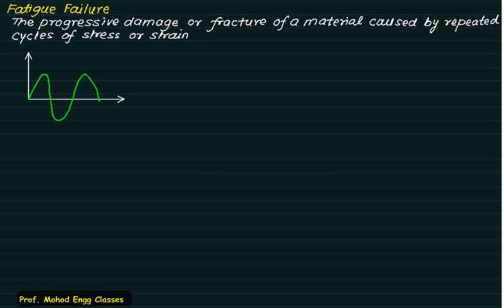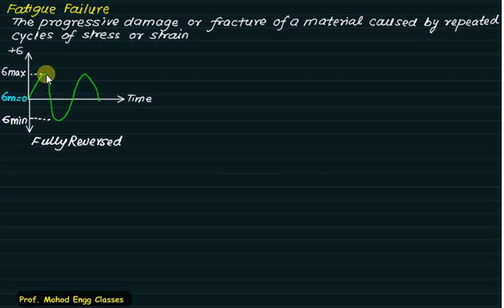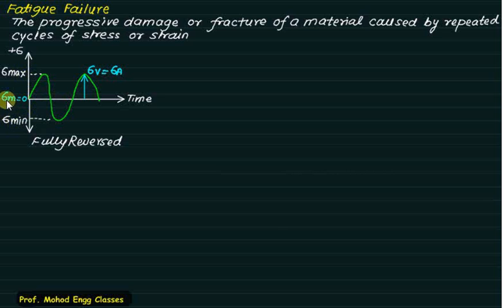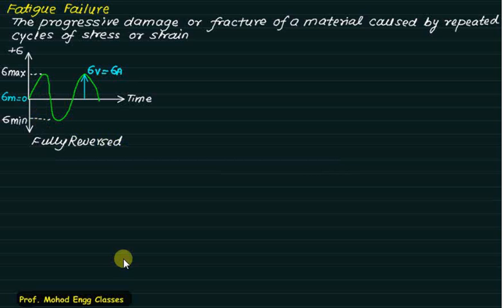The first case is the fully reversed stress. Here the x-axis is the time axis and the y-axis is the sigma axis. The maximum value is sigma max and minimum is sigma minimum. The mean value sigma mean equals zero because sigma max and sigma minimum are the same amplitude. This stress is positive on one side and the same magnitude negative on the other side.